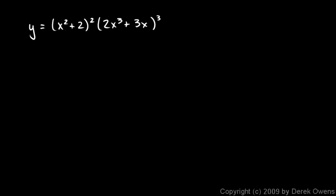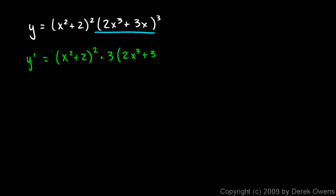Another example: y equals x squared plus 2 squared times 2x cubed plus 3x cubed. So y prime — the derivative is going to be the first, that's x squared plus 2 squared, times the derivative of the second. The derivative of that is going to involve the chain rule: 3 times 2x cubed plus 3x squared, then times the derivative of the inner function, which is 6x squared plus 3.